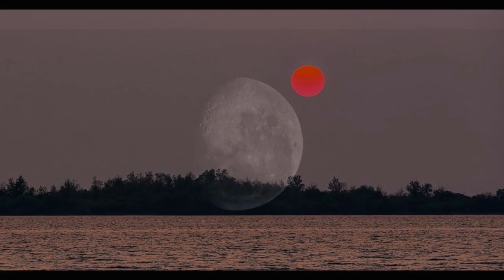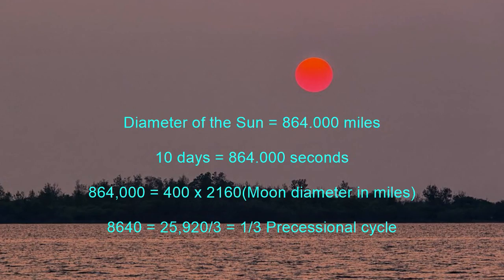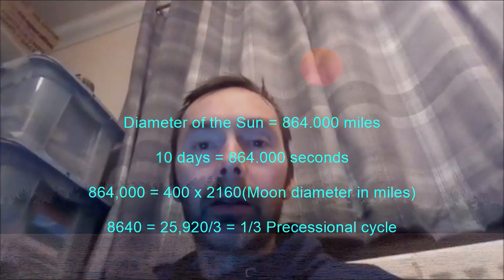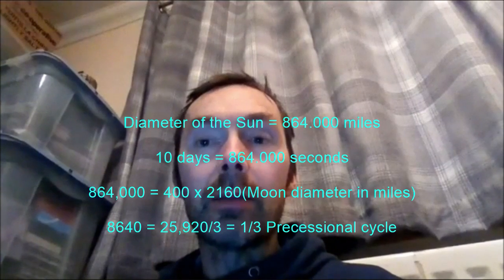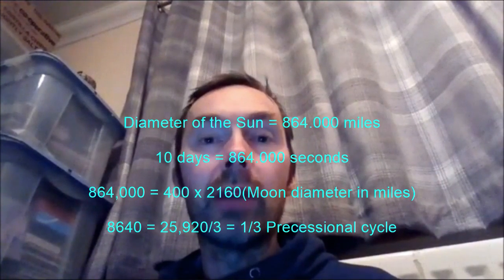Fourthly, the number of seconds in 10 days is the same as the number of miles in the diameter of the Sun, 864,000. What's so special about 10 days? I don't know, other than it's a coincidentally round number.